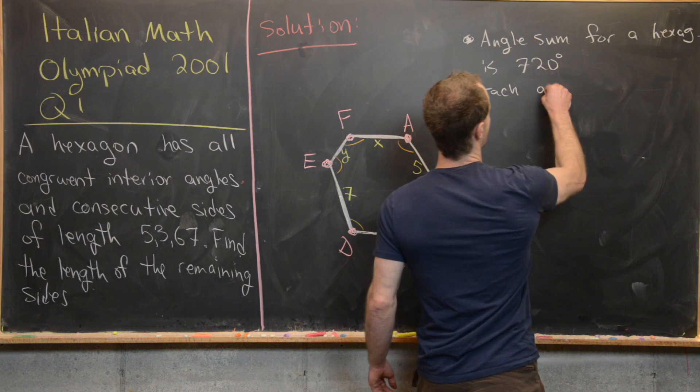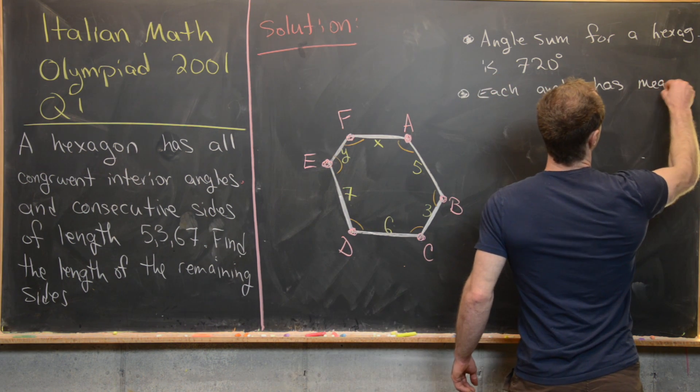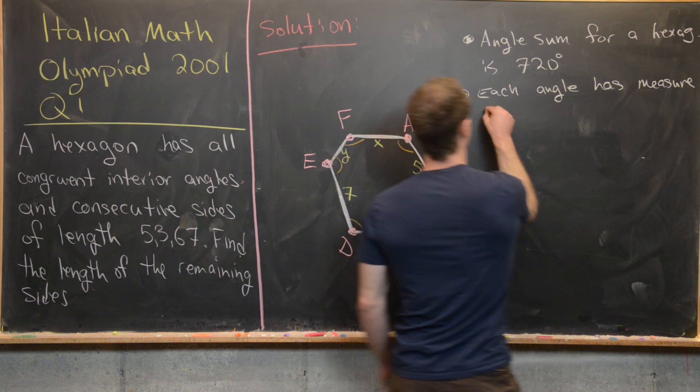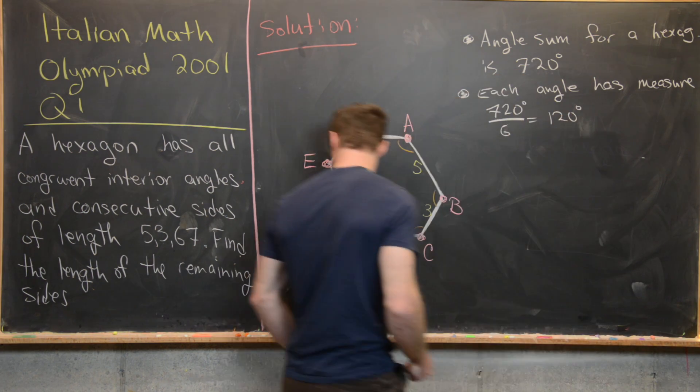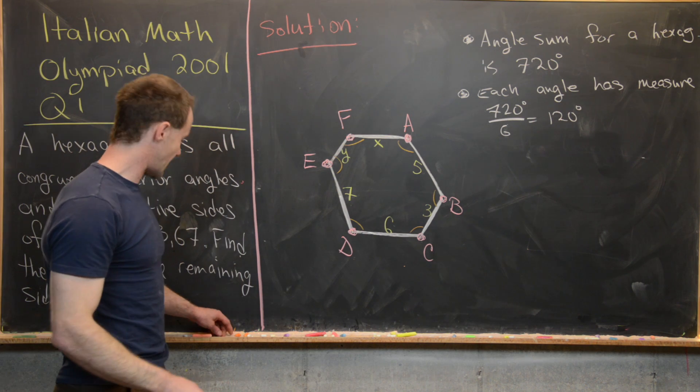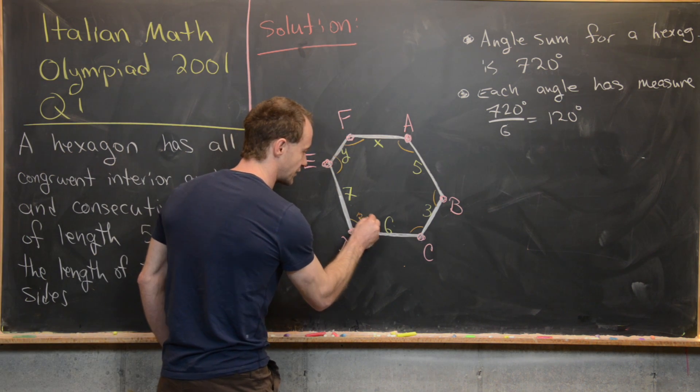But the fact that each of these angles is congruent tells us that each of these angles has angle measure 720 divided by 6. So let's maybe go ahead and write that down. So each angle has measure 720 divided by 6, but that's equal to 120 degrees. So we can maybe go ahead and add that in here: we know that each of these angles is 120 degrees.